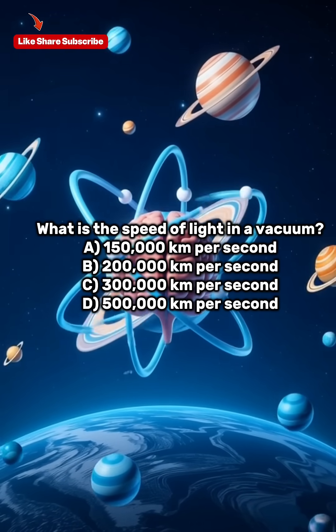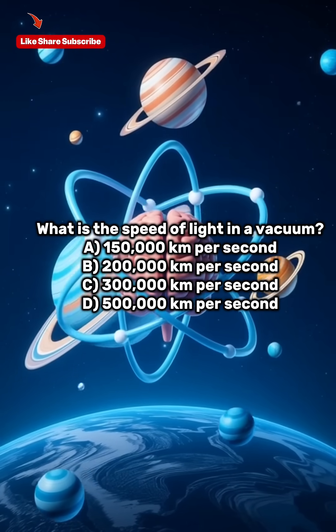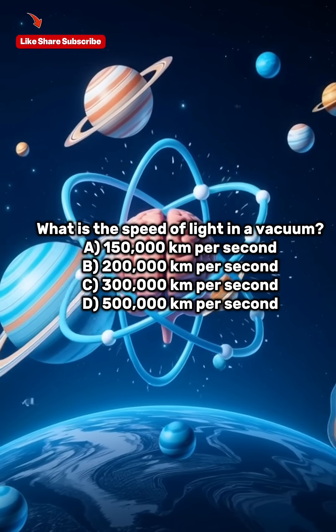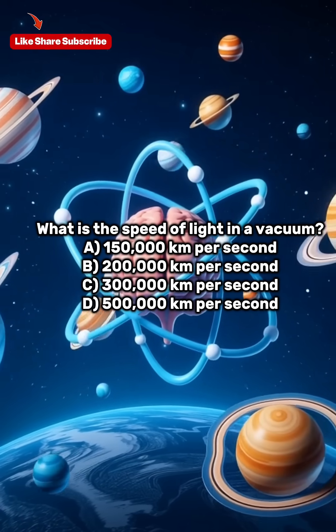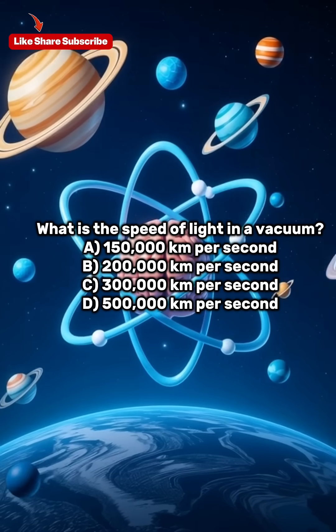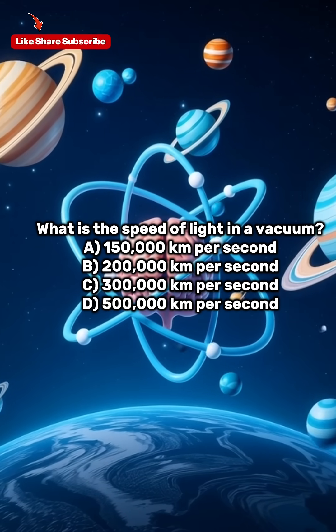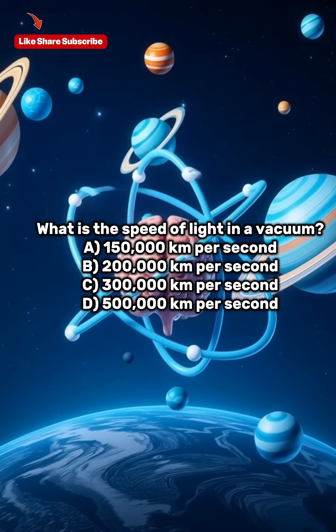What element has the chemical symbol Fe? A) Fluorine, B) Iron, C) Francium, D) Flerovium. Answer: B, Iron.